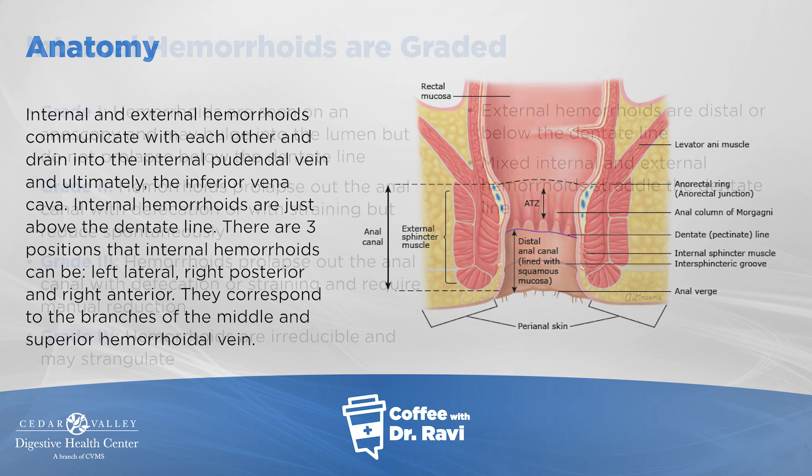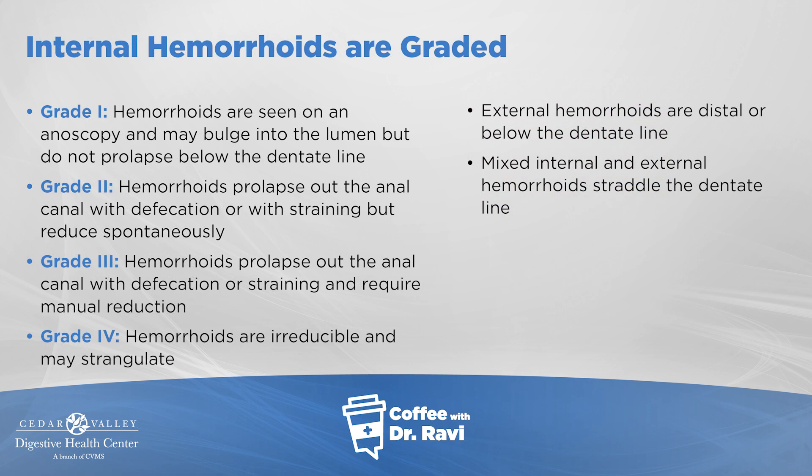Internal hemorrhoids are graded one through four. Grade one is when they start becoming bigger — visualized when you put a small scope in, and they may bulge into the lumen but don't come below the dentate line. Grade two hemorrhoids can prolapse out of the anal canal with defecation or straining, but they go back in. Grade three comes out of the anal canal with defecation and straining and actually requires manual reduction.